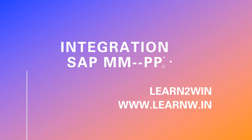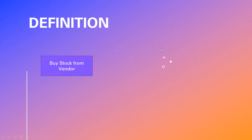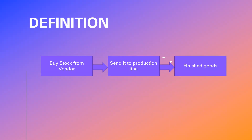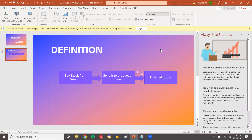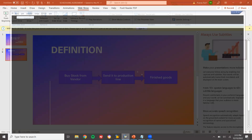Hello everybody, Swaminath here. Today we are going to see integration between SAP MM and SAP PP — production planning and material management. First I am going to buy stock from the vendor, then send it to the production line, and then get the finished goods. This is what I am going to do in SAP. Let us go to the SAP system.